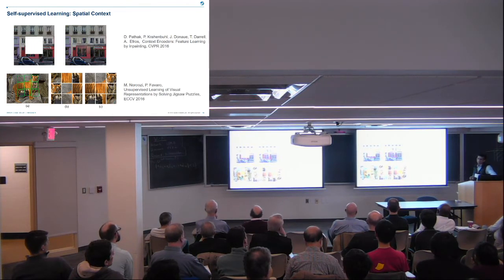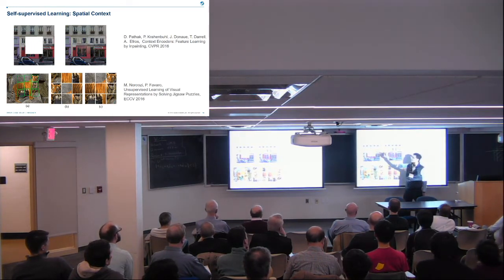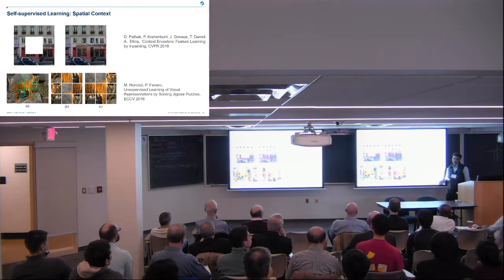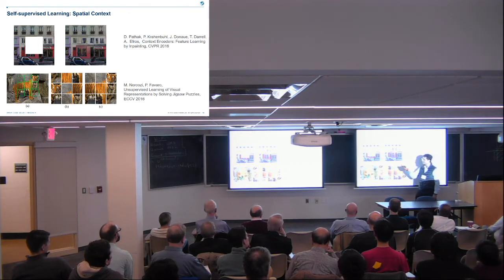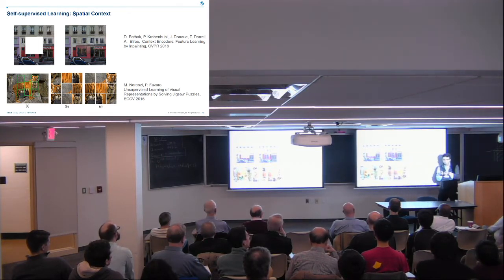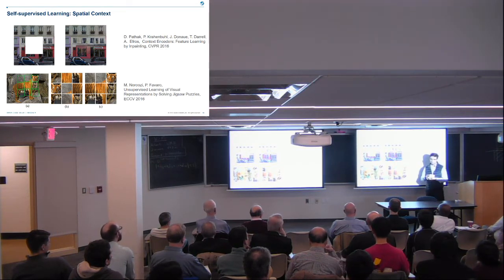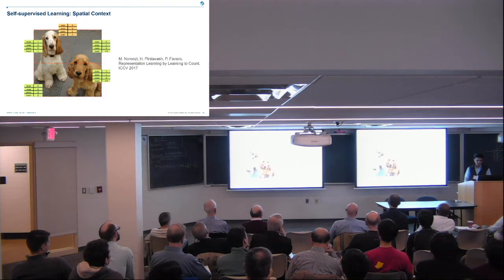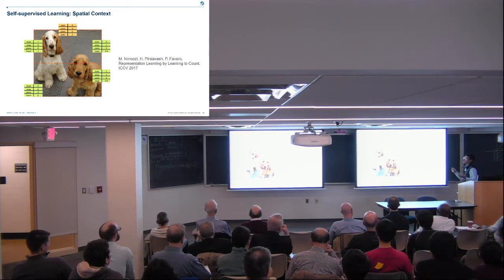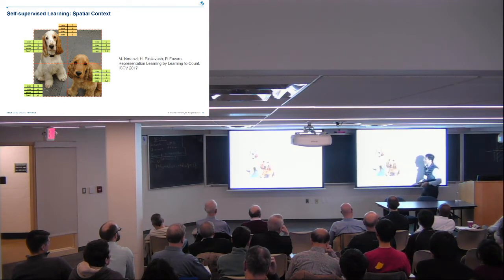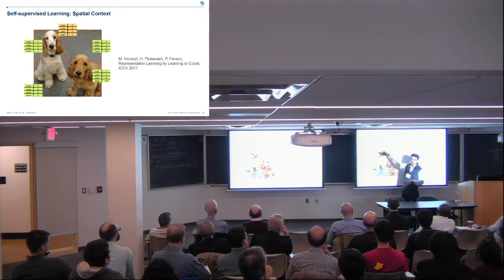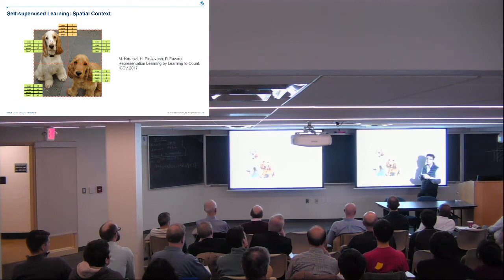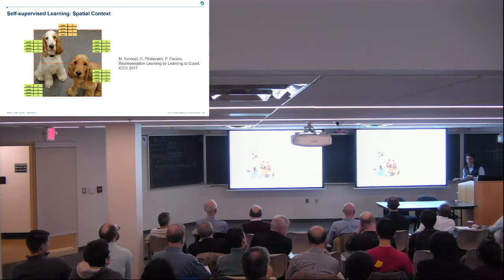You can also solve visual puzzles. You can cut out part of an image from the middle and try to predict what it is. Similarly, you can break an image into pieces — like jigsaw puzzles — and train the machine to solve the jigsaw puzzle. Some interesting work uses counting: every object is a whole. If you divide the image into two parts, half the object goes to each part, so you should have additivity. They use this additivity idea to see whether nice representations can be learned with additivity in the output space.